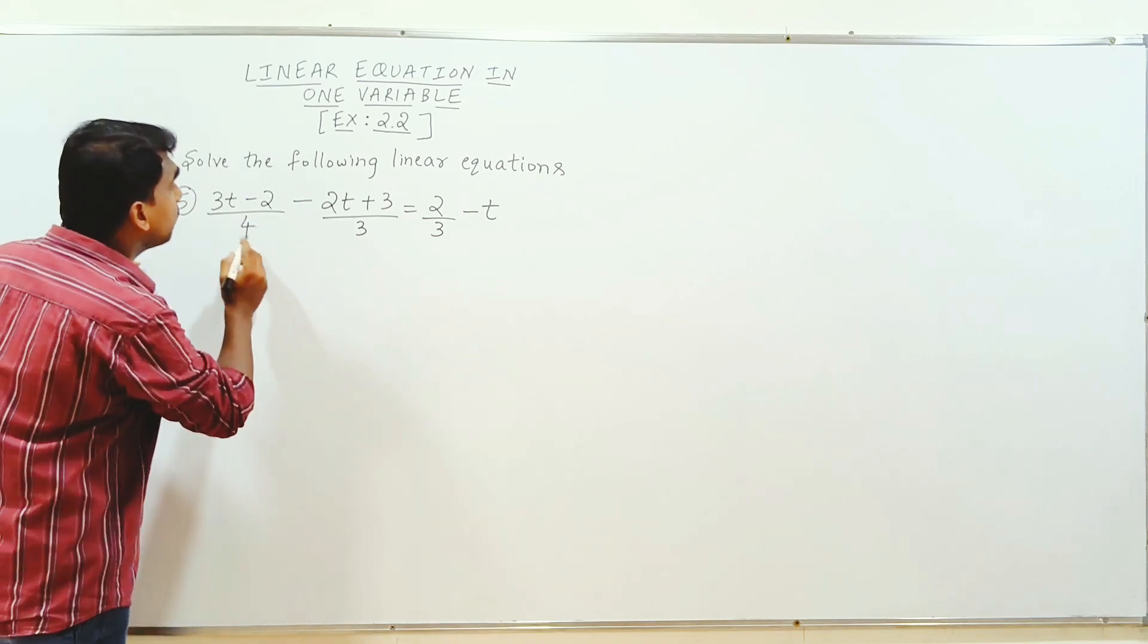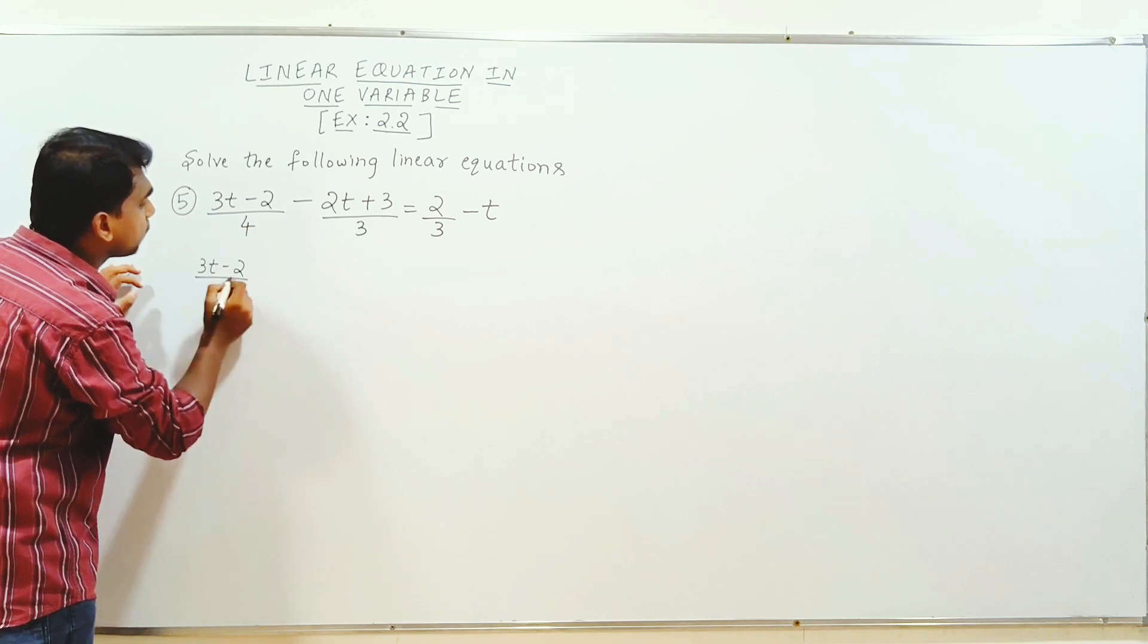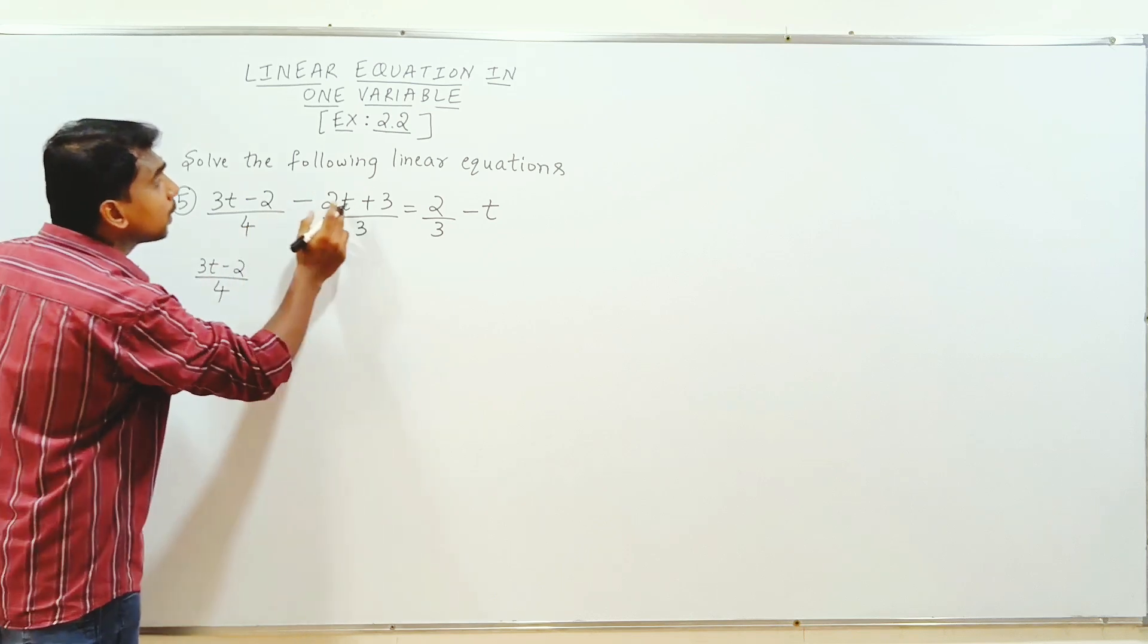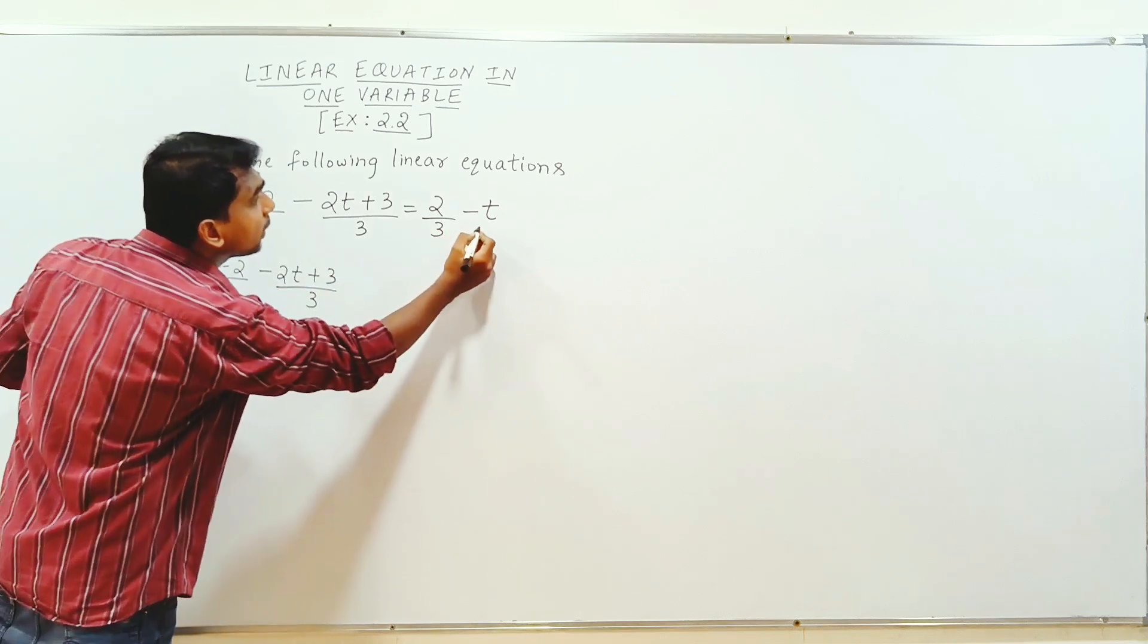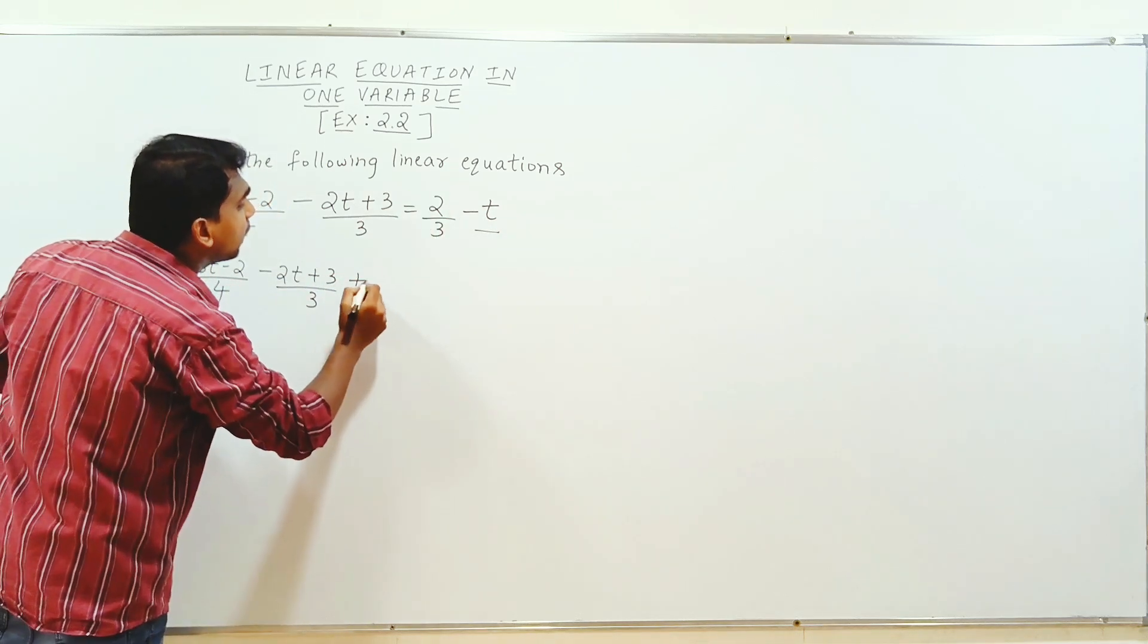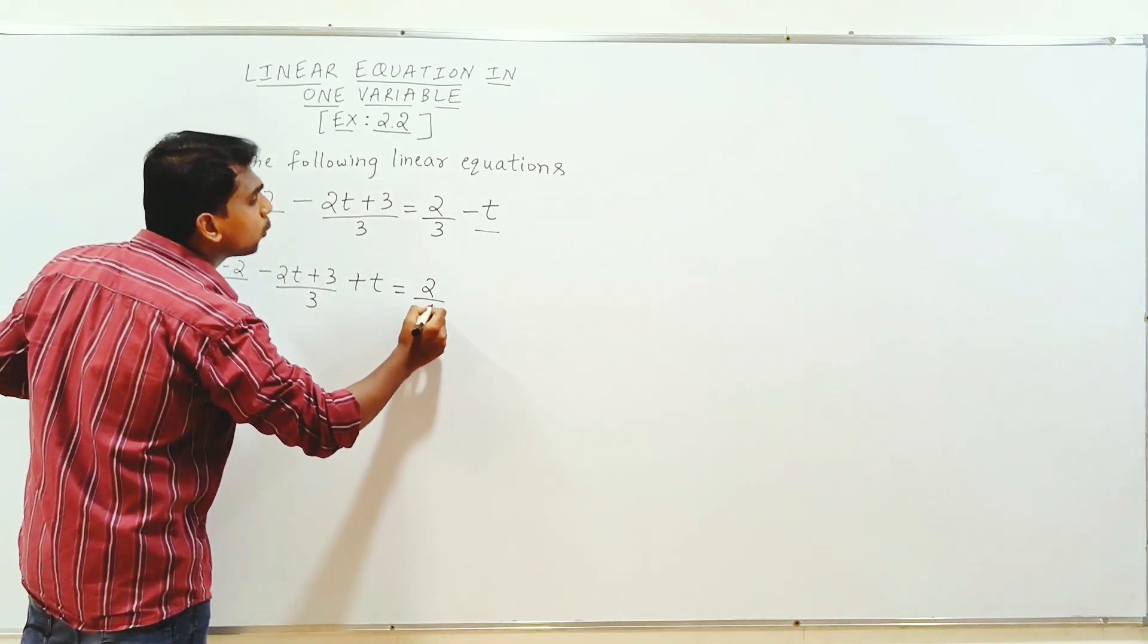So this problem is t plus 1 side, 3t minus 2 divided by 4, here is t plus left side. This is minus t plus less t. This is equal to 2 by 3.